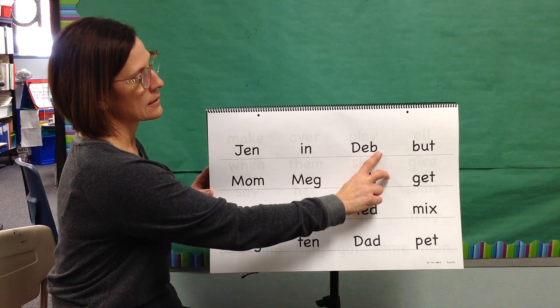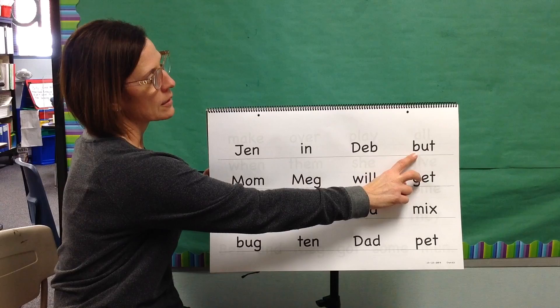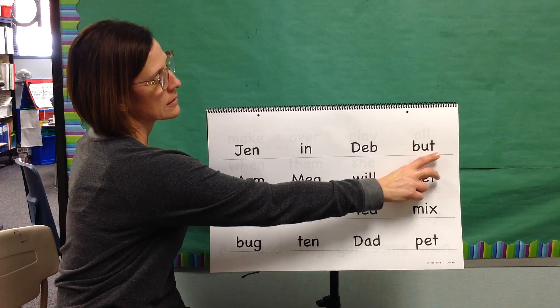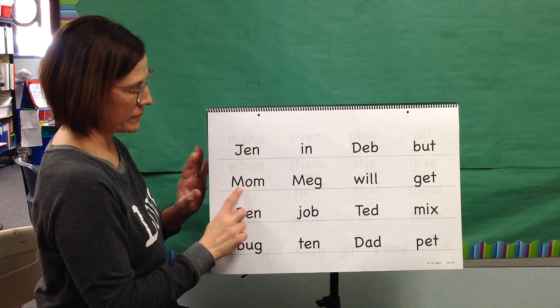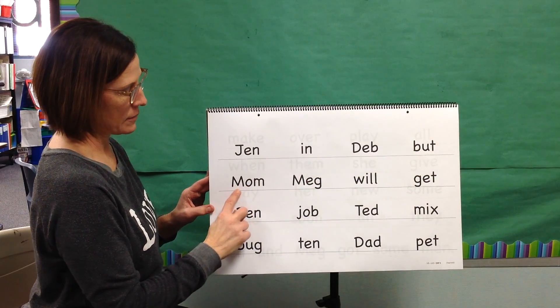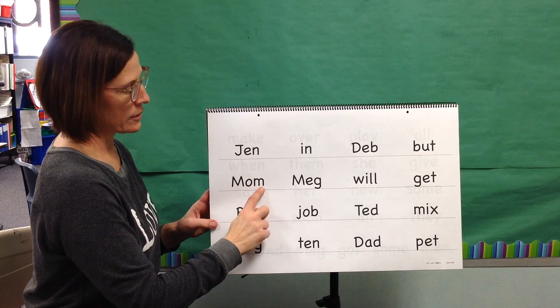Blend: Deb. Word: Deb. Blend: Butt. Word: Butt. Blend: Um. Word: Mom.